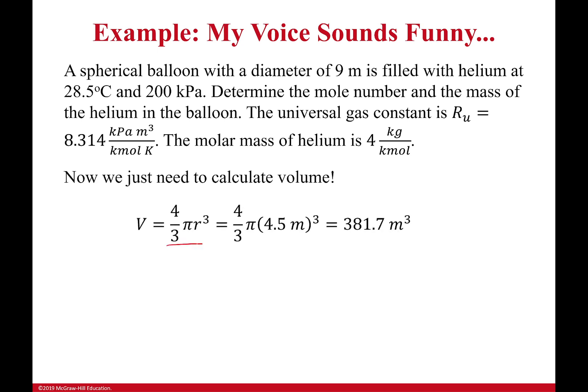So the volume of a sphere is four thirds pi r cubed. As a note, it gave the diameter. So we have to divide that by two. That's why I have four and a half right here. And so I have 381.7 meters cubed. Now I know everything now. And so I can finally calculate the mass, which comes out to be 121.8 kilograms.